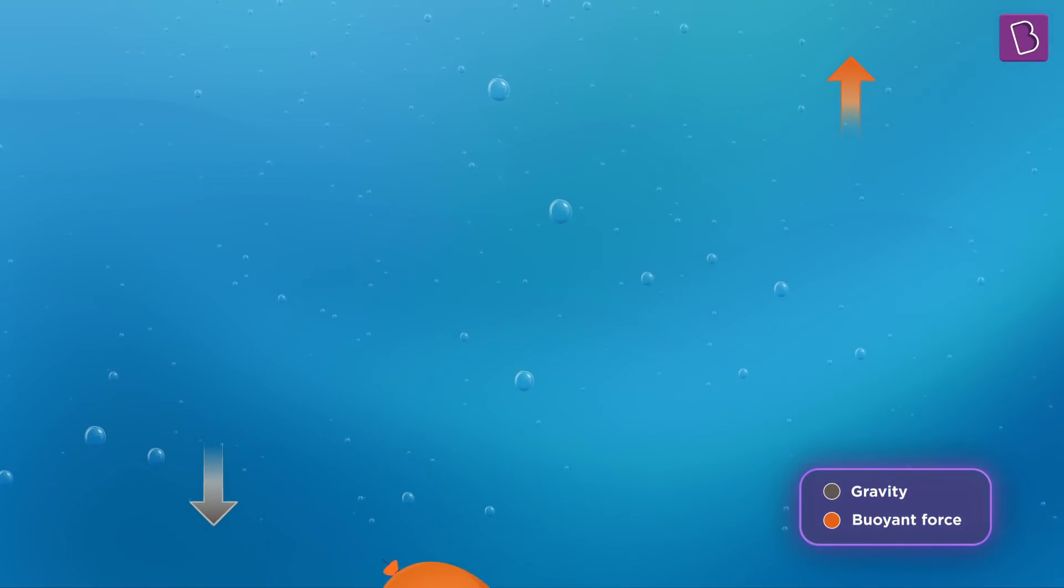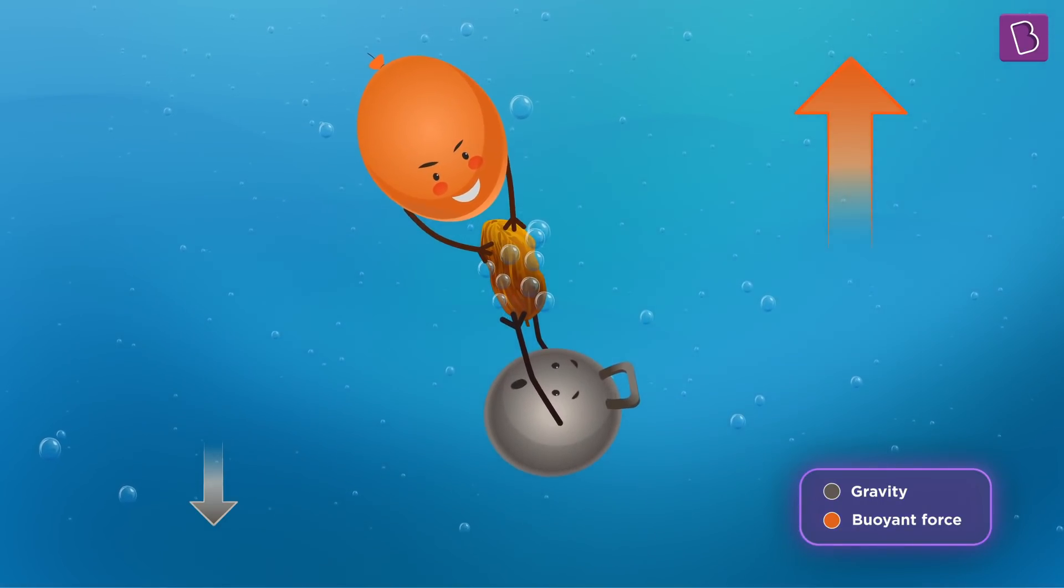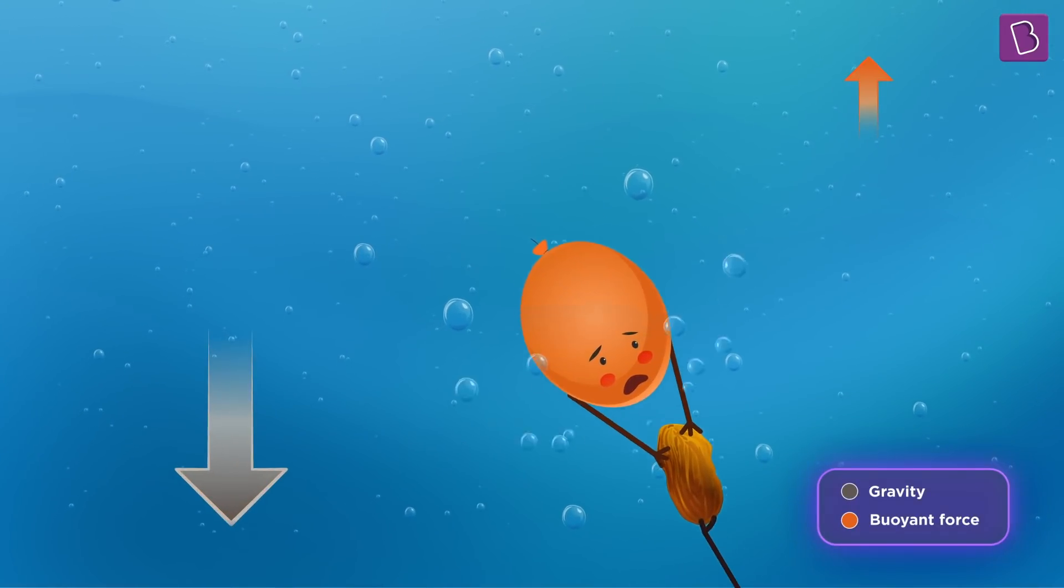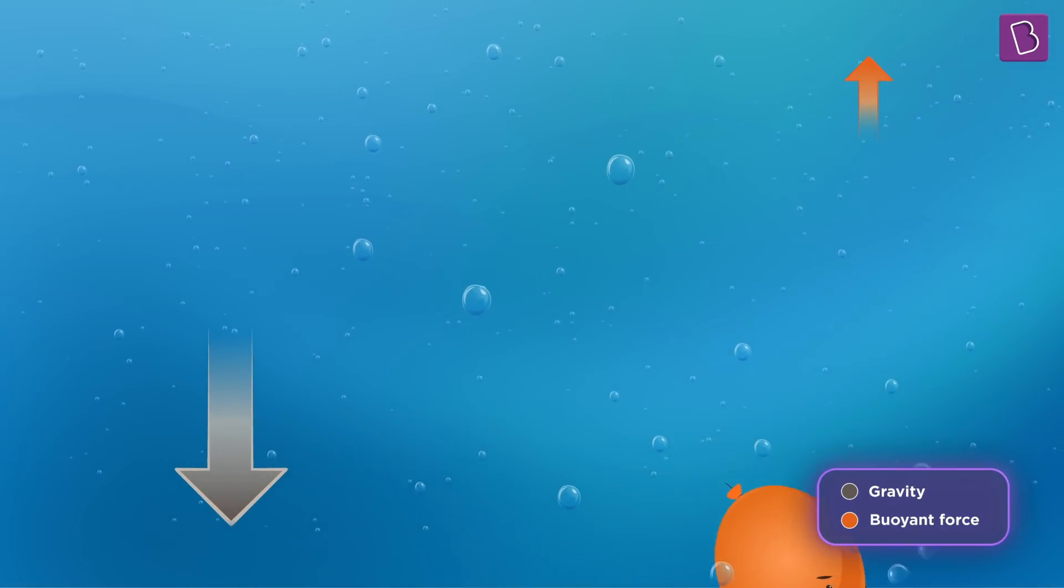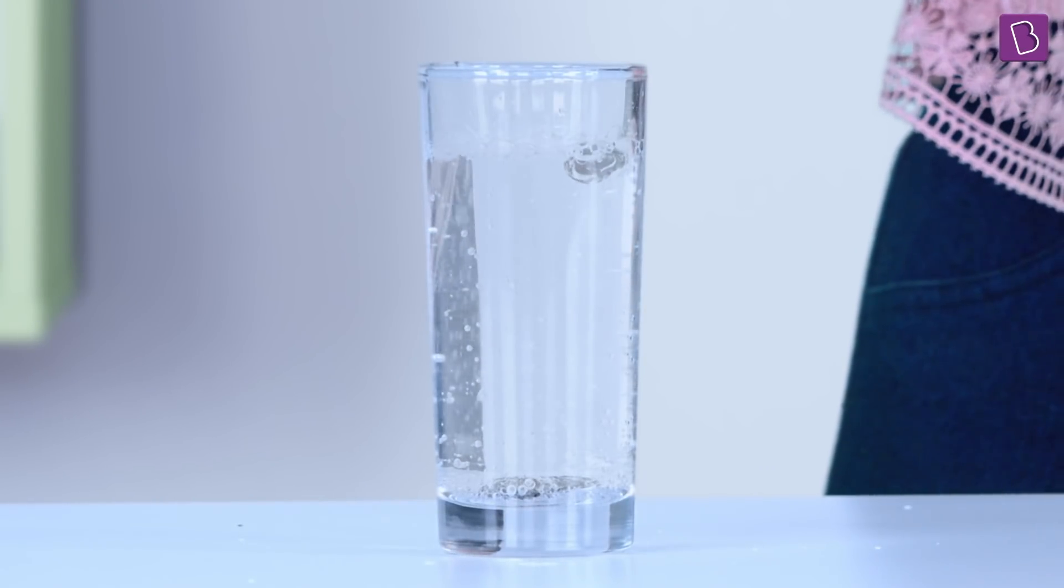Coming back to our raisin. Therefore, we can say that the buoyant force can increase when the volume of the raisin is more and it can decrease when the volume of the raisin is less. And let me remind you that this change in the buoyant force was happening only in the carbonated water or the soda. It was only in the carbonated water that the raisins were rising and falling again and again.